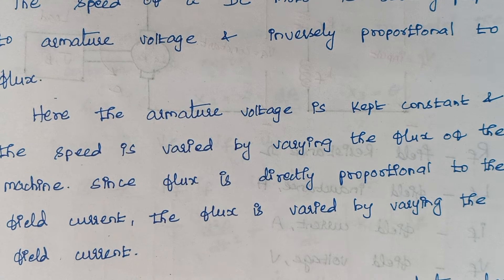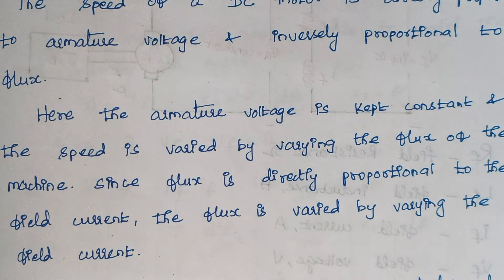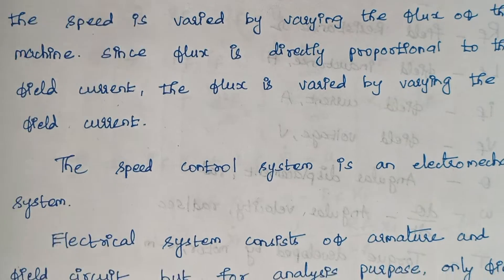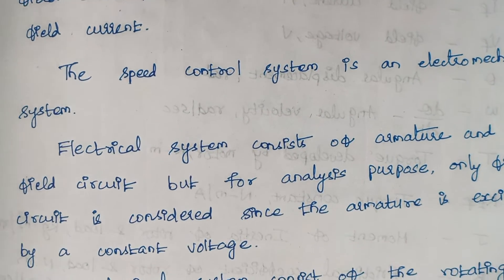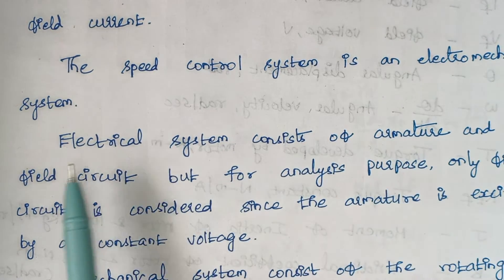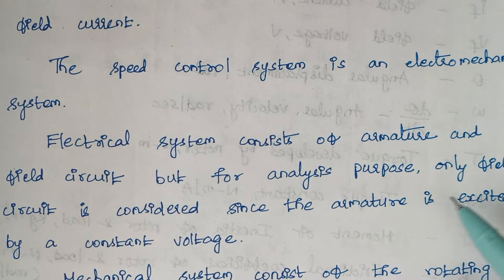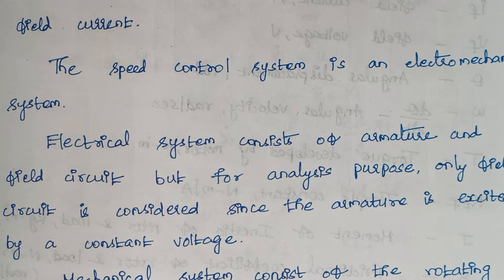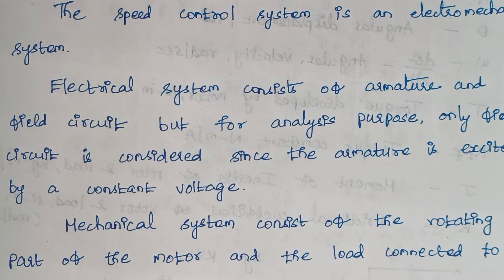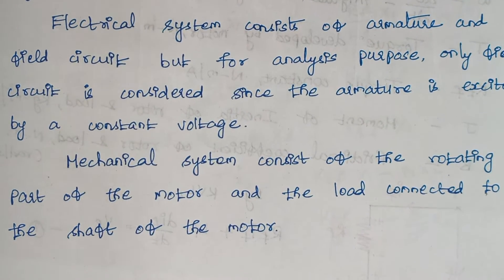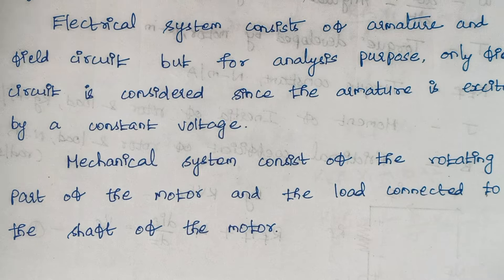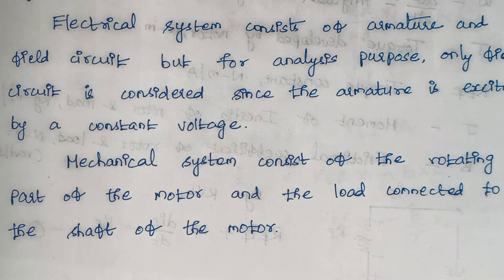The speed control system is an electromechanical system. The electrical part consists of the armature and field circuit, but for analysis we consider only the field circuit since armature voltage is always kept constant. The mechanical system consists of the rotating part of the motor — that is the shaft and the load connected to the shaft — which together form the mechanical system.